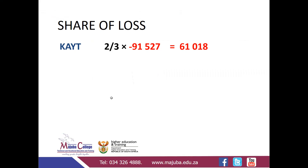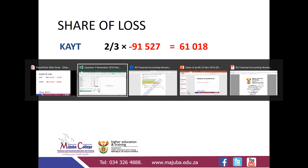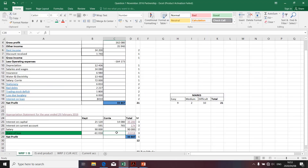The same logic applies in determining Quarry's share of the loss. It is determined by taking the profit sharing ratio of one over three and multiplying by the resulting loss of 91,527. Applying that gives an amount of 30,509. Since it's a loss, we record it as minus 30,509 and transfer it to the appropriation statement.